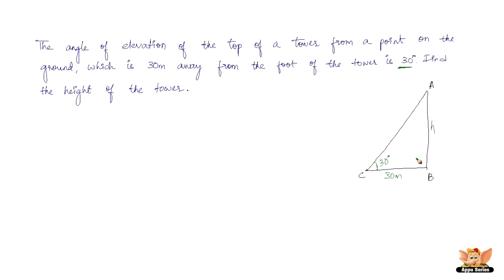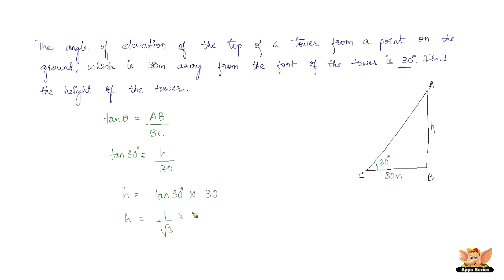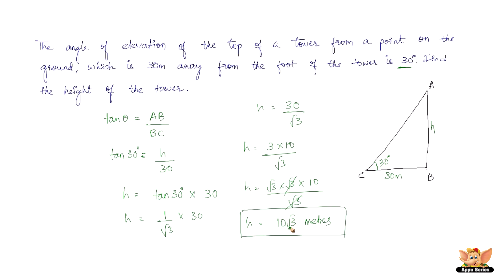Looking at the right-angle triangle, we have the opposite side (AB) and the adjacent side (BC), so we use tan θ again. tan 30° = AB/BC = H/30, so H = tan 30° × 30 = (1/√3) × 30 = 30/√3. Writing 30 as 3×10 and 3 as √3×√3, the √3 terms cancel, giving H = 10√3 meters.